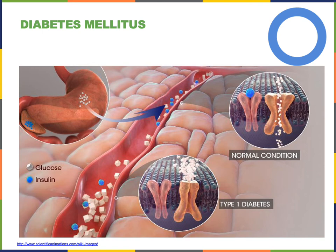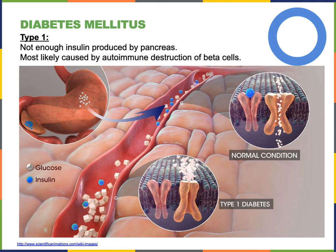Diabetes mellitus is a disease that results from elevated blood glucose levels when insulin signaling is impaired. Type 1 diabetes results from low insulin production. If the pancreas cannot produce enough insulin, cells throughout the body cannot take glucose out of the blood, leading to high blood glucose levels. This is often caused by an autoimmune disease that attacks and destroys the beta cells of the pancreas, preventing the pancreas from secreting insulin.